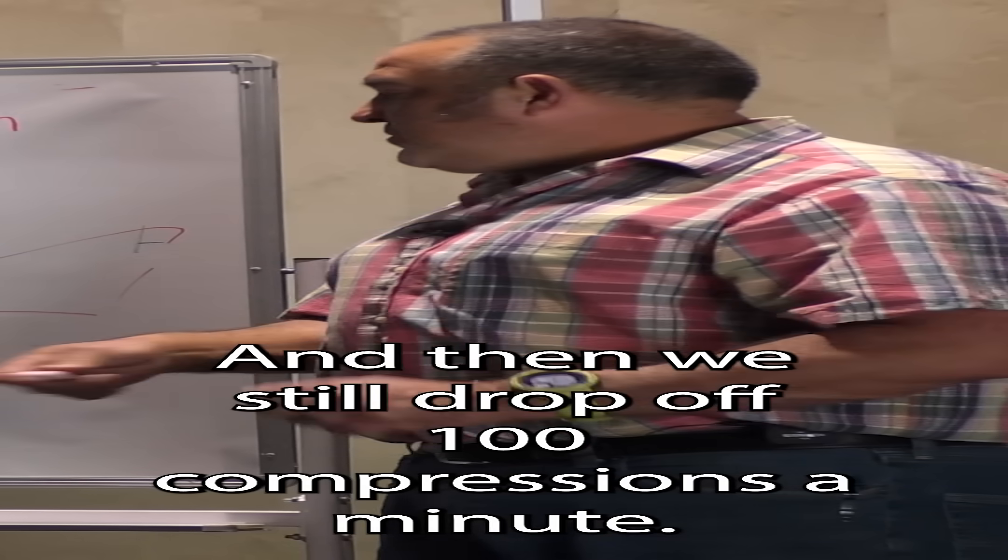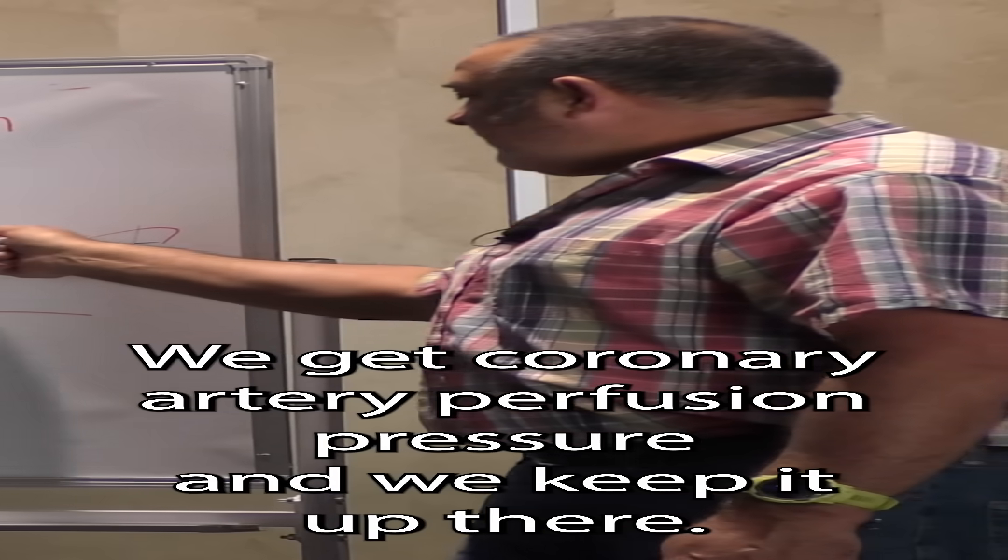So we changed it to 30 and 2. Well, that just does it a little bit longer, but we still drop off. Now, 100 compressions a minute - we get coronary artery perfusion pressure and keep it up there, then we shock it as quickly as we can. That's why we have a 47% success rate here in Flagstaff.